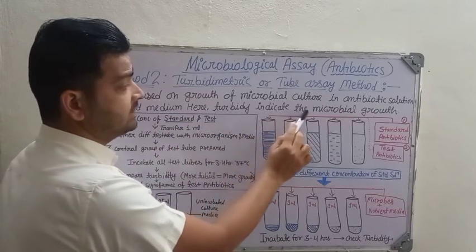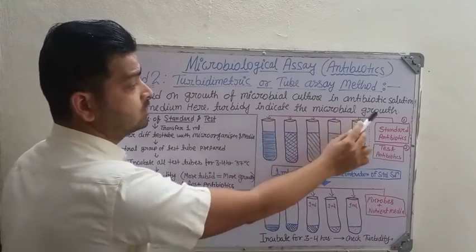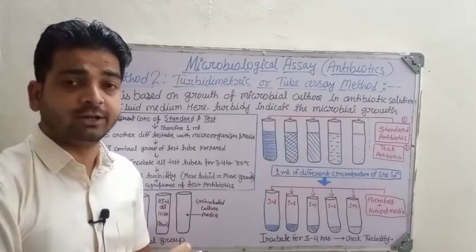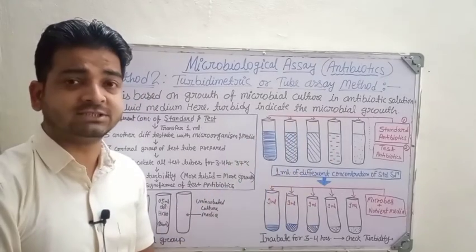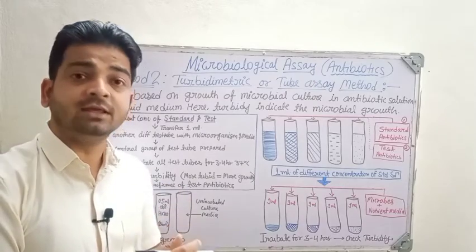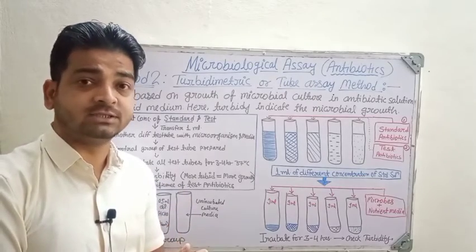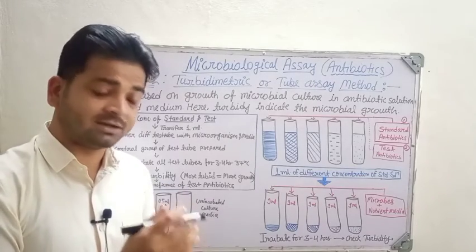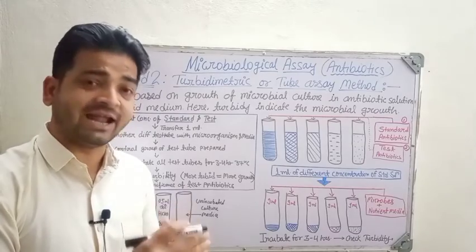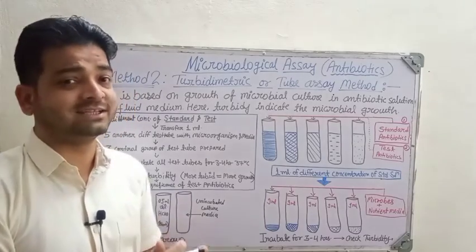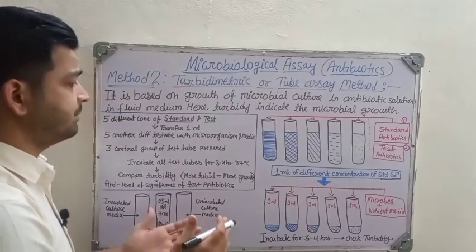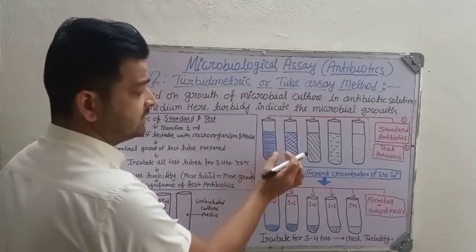Here, turbidity is going to indicate the microbial growth. Whatever antibiotic we want to test, we have to culture it with the microorganisms, and then we are going to check it against the standard and the test antibiotic. Let us understand this with an example.